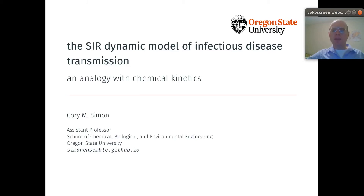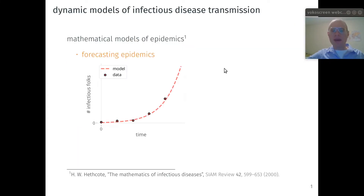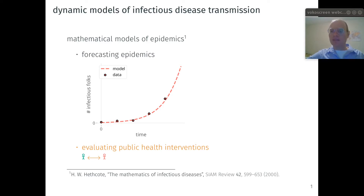The SIR dynamic model of infectious disease transmission and its analogy with chemical kinetics. I'm Corey Simon, an assistant professor of chemical engineering at Oregon State University. Mathematical models of epidemics are useful for both forecasting epidemics and understanding how public health interventions affect the trajectory of an epidemic.